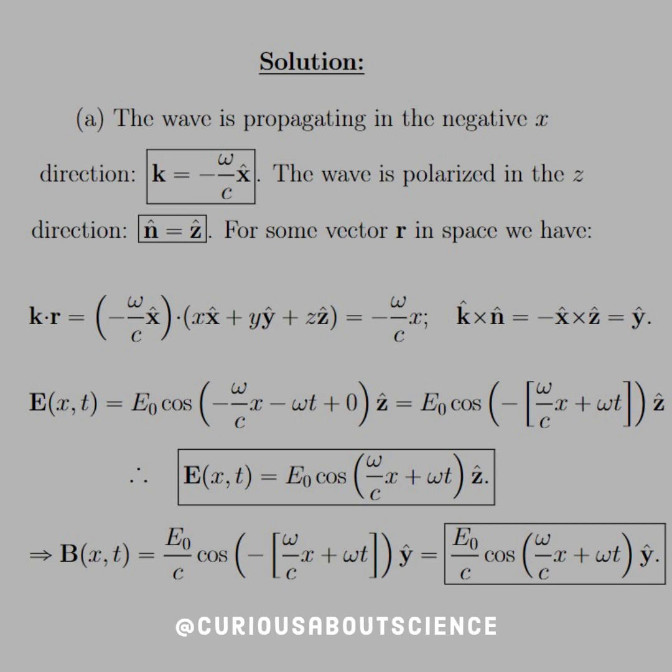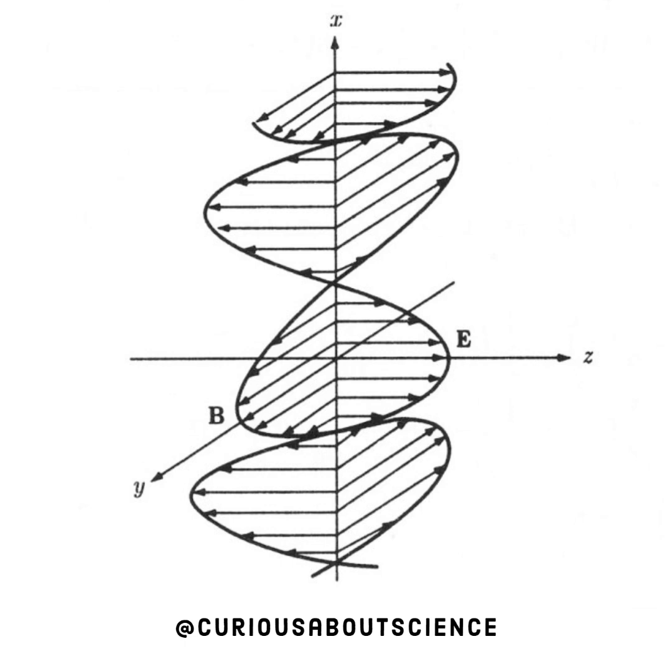And B, once we plug everything in, we get E naught over C cosine omega over C times X plus omega T in the Y direction. A couple things to note here. Here's our sketch. Let's note that we are traveling, propagating in the X direction. It is notation that our polarization affects which direction the E field points. So, if our polarization is traveling in the Z direction, we have to put the E field on the Z axis. And, what this tells us now is that we have E on the Z, so B has to go on the Y if we're propagating in the X. That mutual orthogonality is make and do right now.